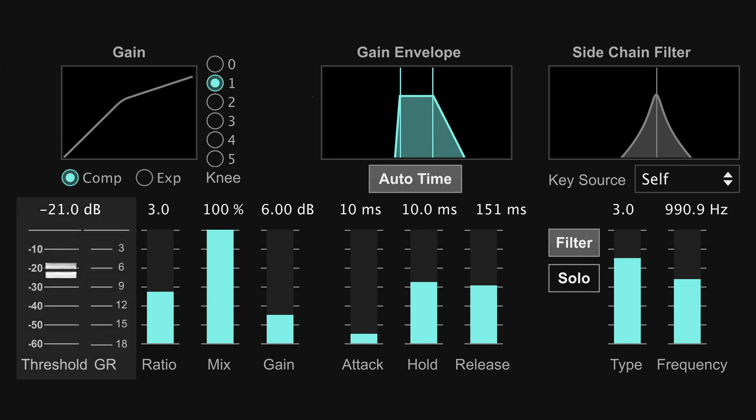Next up is your threshold. Threshold determines when the compressor kicks in. So if the threshold is set to negative 30 dB, the compressor will start working when the signal gets louder than negative 30 dB.